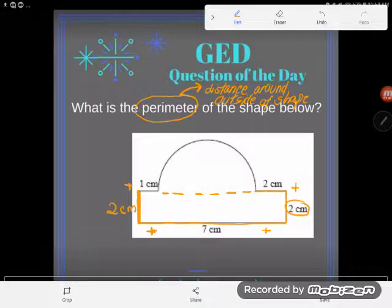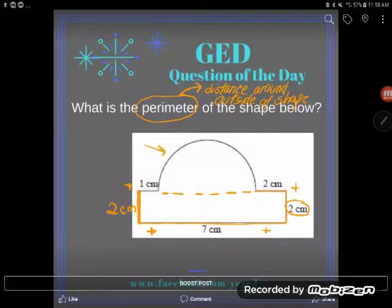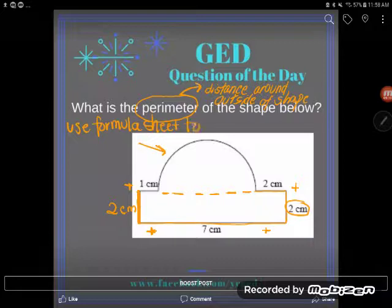The only problem I really have with finding the perimeter of this particular shape is this round piece. Notice that I have no idea how long this round piece is. It's obviously not going to be the same measurement as this flat line here. So do realize that for round pieces, for pieces and parts of circles, you are going to need the formula sheet. So I'm going to use the formula sheet just to find this missing piece right here. We'll use our formula sheet to find missing round pieces.